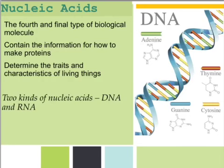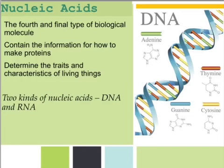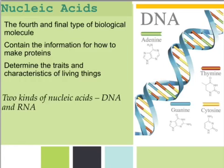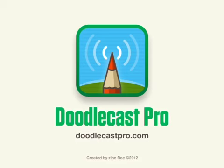The fourth type of biological molecule are nucleic acids. These contain the information for how to make proteins, and they really determine the traits and characteristics of living things — extremely important. We will study these later in the year. There are two kinds of nucleic acids: DNA and RNA, and we'll spend a lot of time on them. You've probably heard of DNA. This turned out to be a longer lesson than expected — we'll talk about these things next week. Have a good weekend.